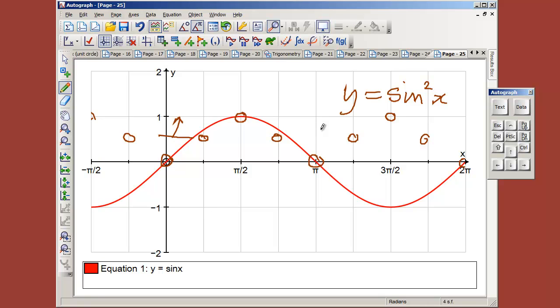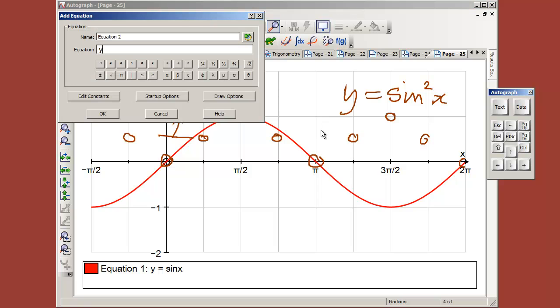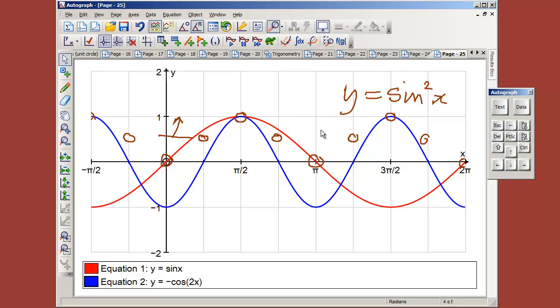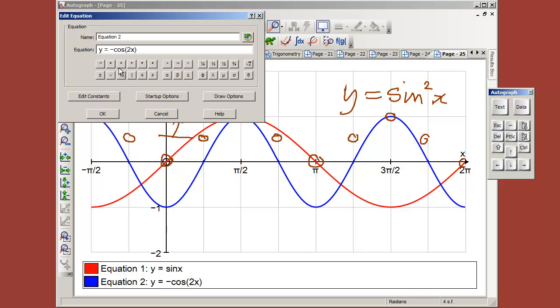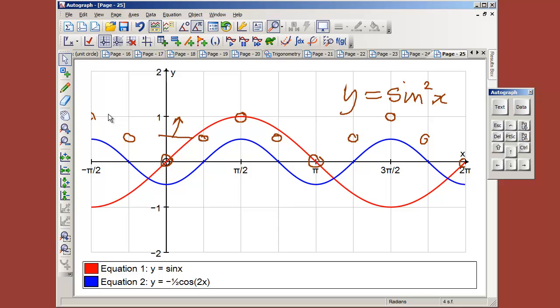So I think we've got enough clues now. Let's enter y equals minus cos of 2x. That's not quite right, because we said it needs to have an amplitude of a half. So we'll double click on that and stick a half in there. That's better.